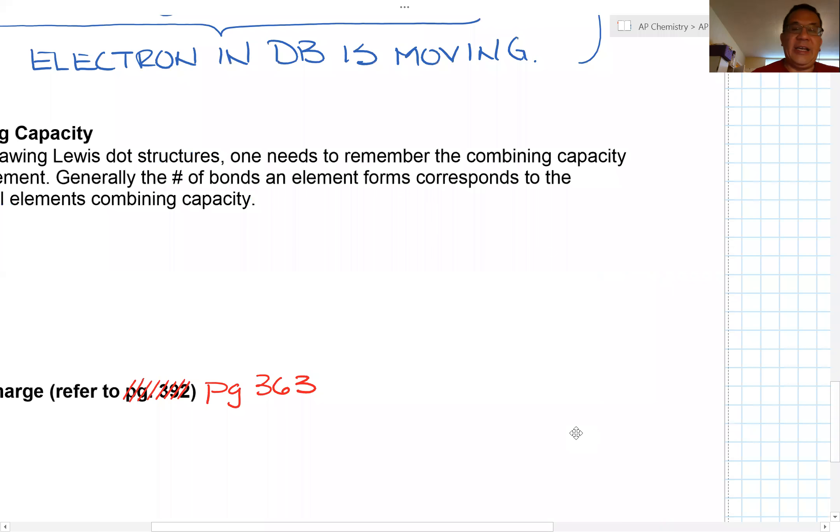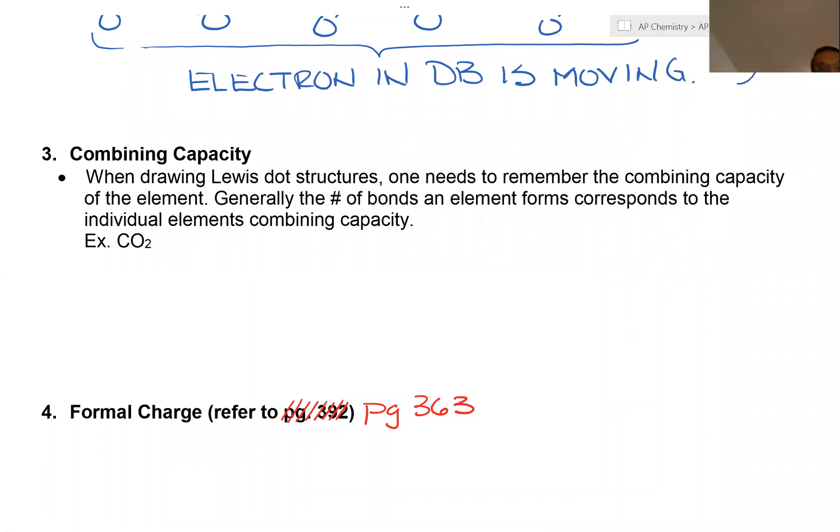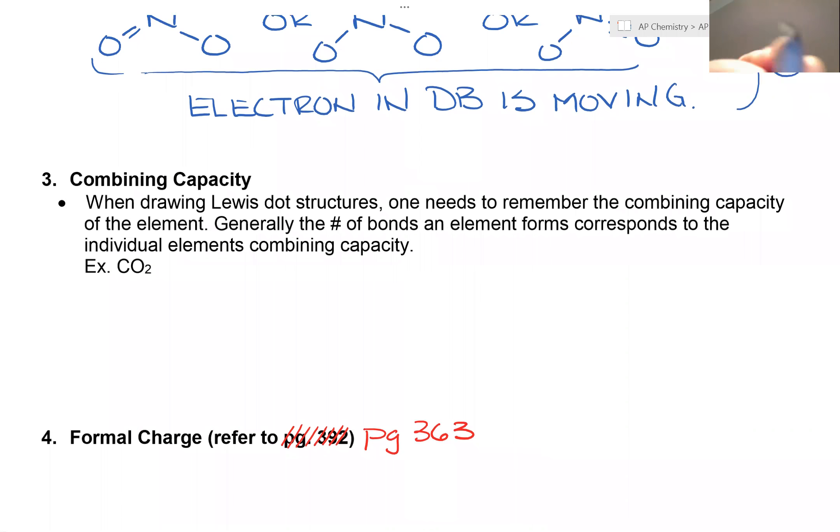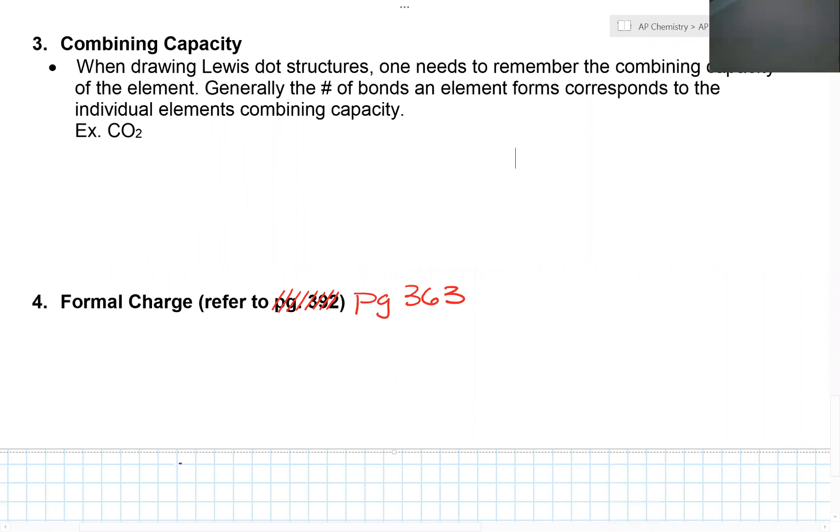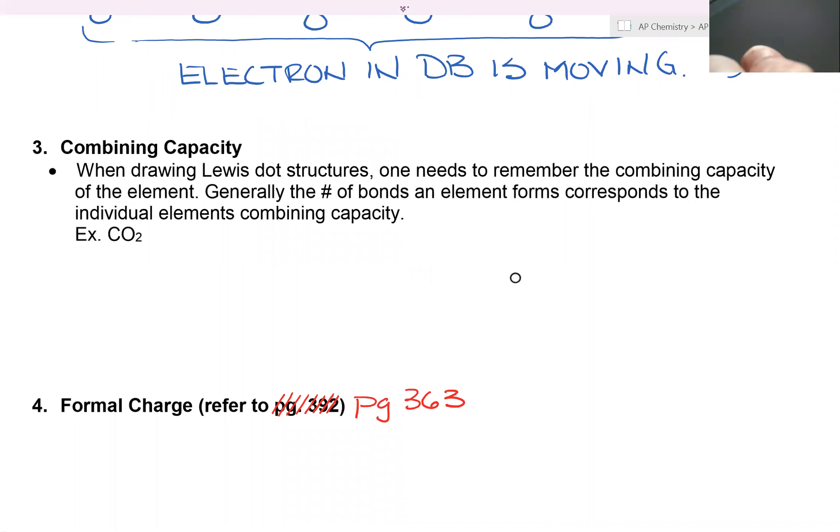The last one I want to talk about is combining capacity. When drawing Lewis dot structures, one needs to remember the combining capacity of the element. Generally, the number of bonds an element forms corresponds to the individual elements combining capacity. For example, let's take a look at carbon dioxide. Carbon dioxide, a lot of times we draw it like this: O, C, double bond, O, like this. Don't worry about the lone pairs.